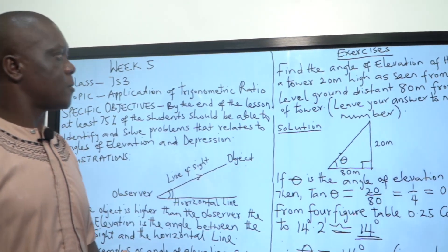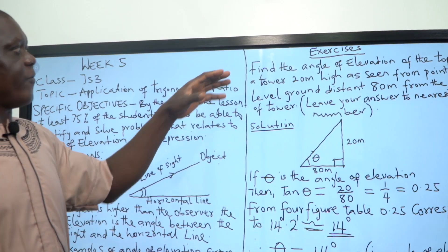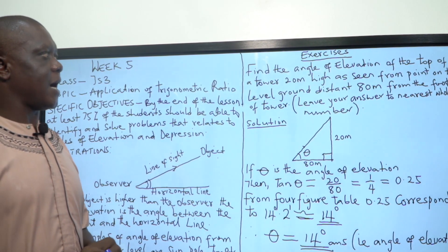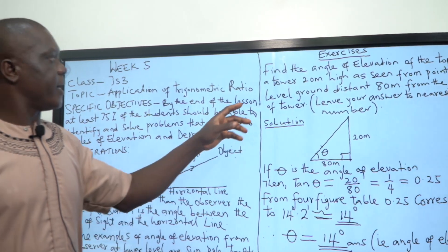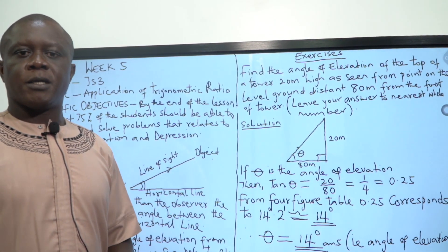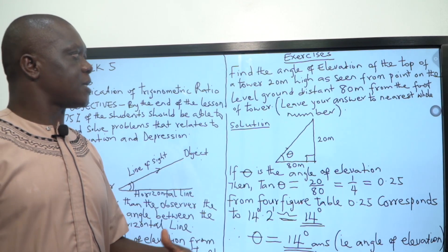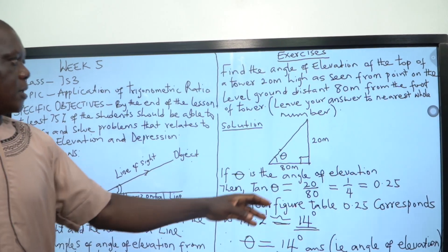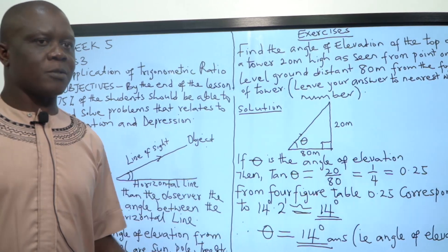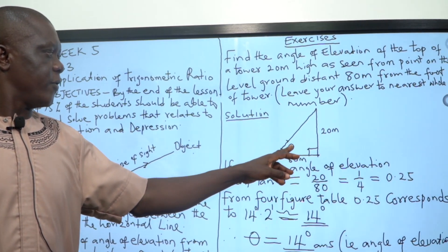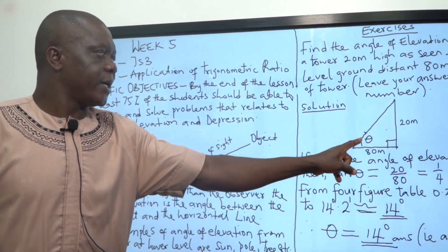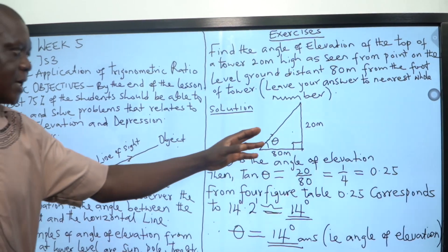Then let us look at some exercises. Number one: Find the angle of elevation of the top of a tower 20 meters high as seen from a point on the level ground, the distance 80 meters from the foot of the tower. The question requires us to leave our answer at the nearest whole number.